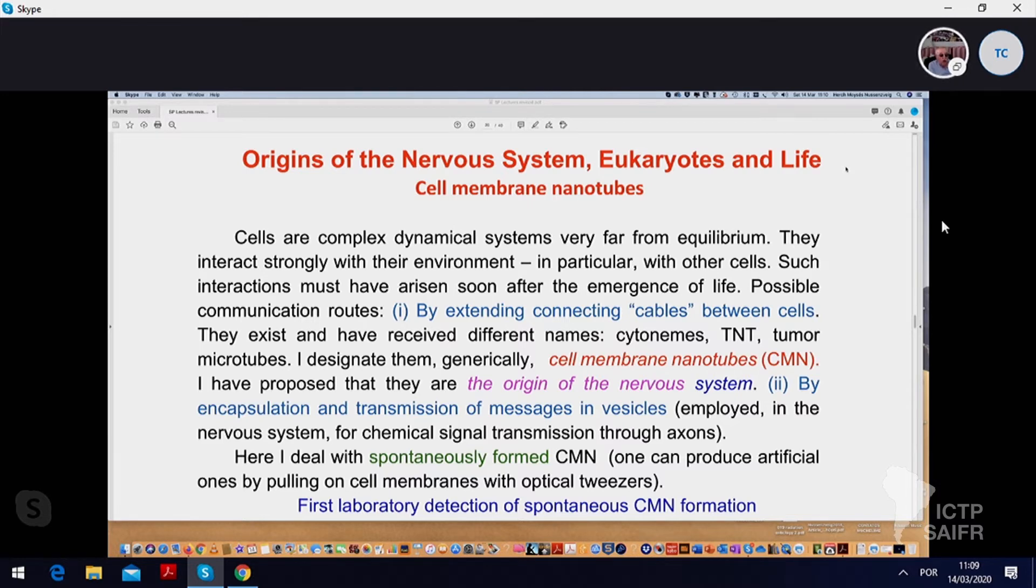Now, I have proposed that CMN are the origin of the nervous system. The second way of communication that is possible is by encapsulation of the message in the vesicle and transmitting the vesicle. And this is also used in nature with the nervous system. Precisely, that's how transmission of nervous signals is achieved by vesicles through the axons of the neurons. The ones that I want to discuss and have been discussing are spontaneously formed CMNs.